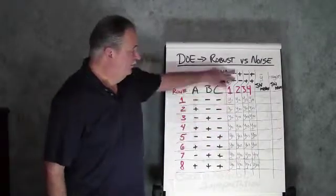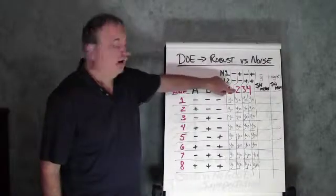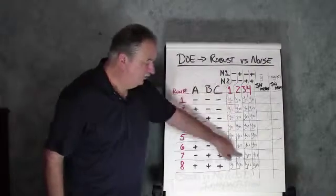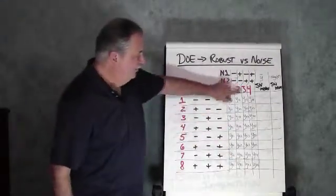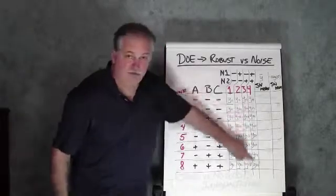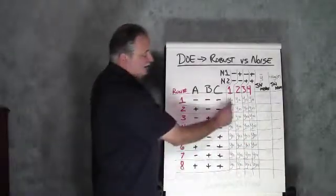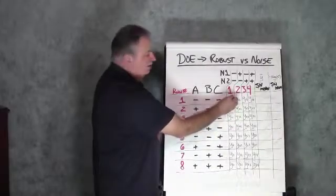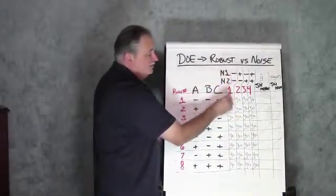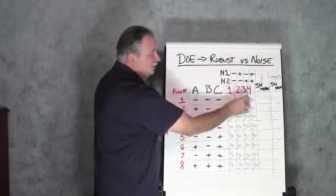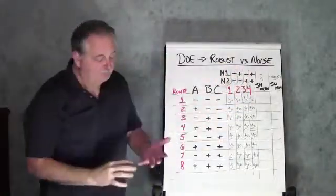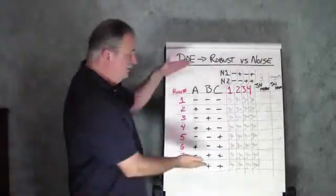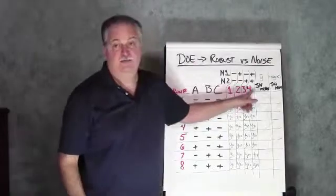Then we set it up for the second condition in our array for our noise factors. And we run the whole experiment again. Same thing for run number three and then run number four. So now we actually have a set of data for each one of these conditions of our noise factors. And we've done that for the whole array of the noise factor. Now yes, this does take some extra time because we're going to be conducting this whole experiment four times.